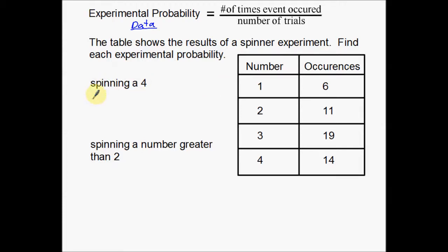So this is what we want to do. We want to find the probability of spinning a 4. So the probability of spinning a 4 using experimental probability. Now again, instead of what we want over total, in this case, theoretical probability would be 1 over 4.